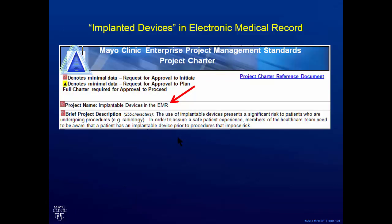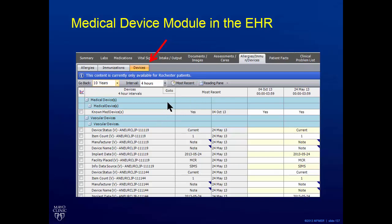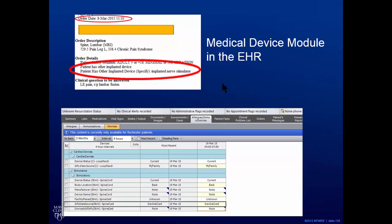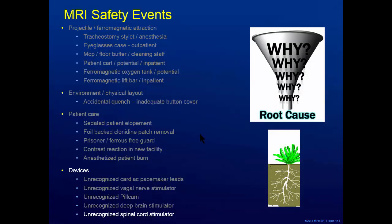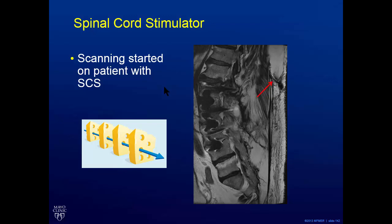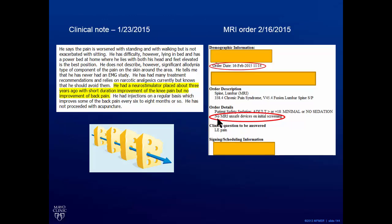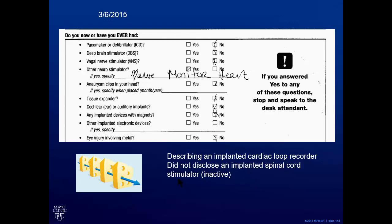We've been implementing an implanted devices module in our electronic medical record, which now gives us a good handle on what's implanted in our patients. It flags patients in our schedule and gives us alerts for what we need to know. In the last couple months, we did start scanning a patient with a spinal cord stimulator before it was caught early — the Swiss cheese aligned again. It was ordered as 'no MRI unsafe devices' even though this patient had a spinal cord stimulator.